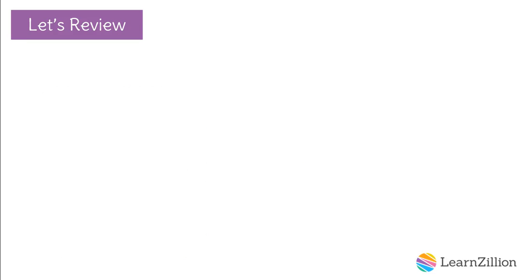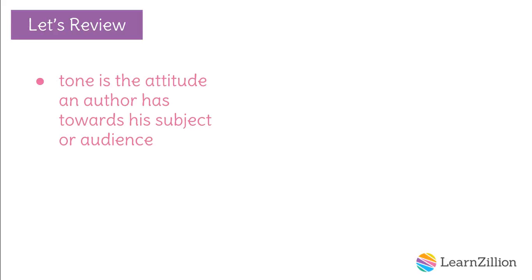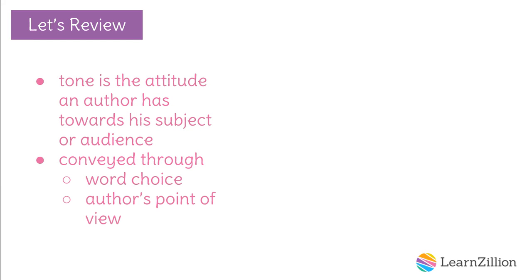Let's review what we already know about tone. We know that the tone is the attitude an author has towards his subject or audience, and is most often conveyed through word choice or the author's point of view. Every written piece is comprised of a central theme or subject matter. For instance, A Night Battle Over a Week Since is about a specific battle that took place during the Civil War. The manner at which the author approaches this theme or subject matter is the tone.